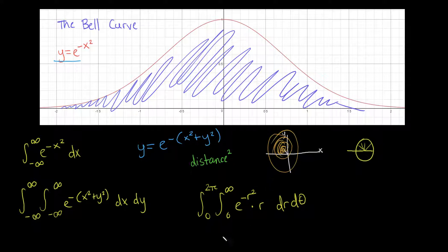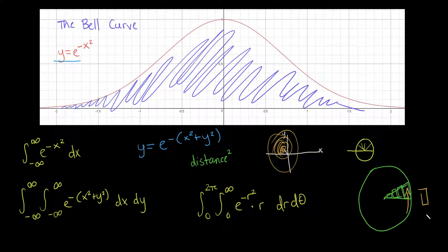Why multiply by r? In polar integration, if we consider a small sliver of angle, the area elements form rectangles that get bigger as you go out. One side is dr, but the other side is not just dθ — it's r·dθ, because the arc length scales with r. For a smaller r, that side is much shorter. As you calculate for farther and farther r's, the rectangles get bigger. That's why we multiply by r.